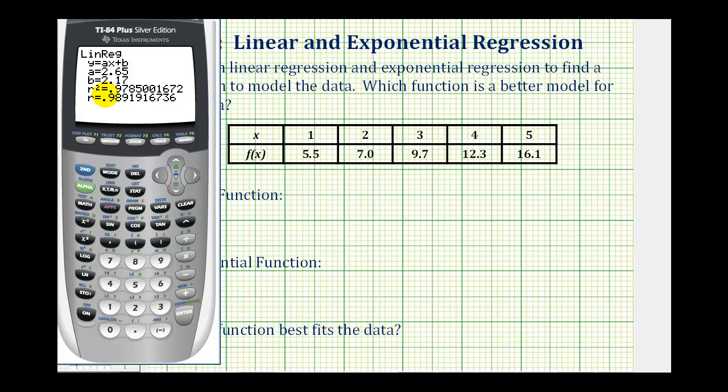Notice how a is 2.65 and b is 2.17. And notice the r-squared value is approximately 0.9785.